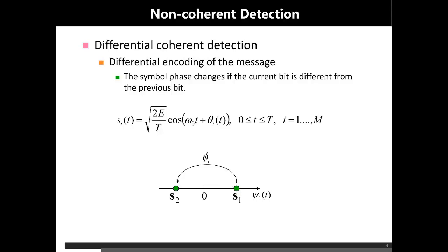Differential phase shift keying is based on a very simple and clear concept of differential encoding. What is meant by differential encoding? It means that the phase of each symbol will not depend on its absolute value but will depend on the previous bit — whether the current bit is the same as or different from the previous bit. So the phase assigned to each pulse depends not on the exact value of the current bit alone, but also on the previous bit, assigned by means of the difference between the current and previous bit.